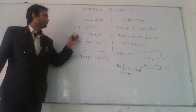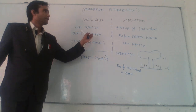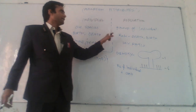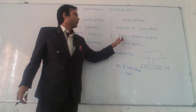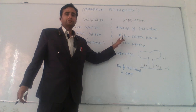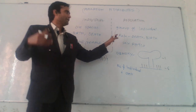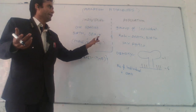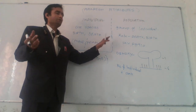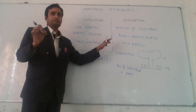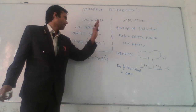In the individual, birth and death are there. But in population, there is a birth and death rate per unit time in a particular area — that is the rate.